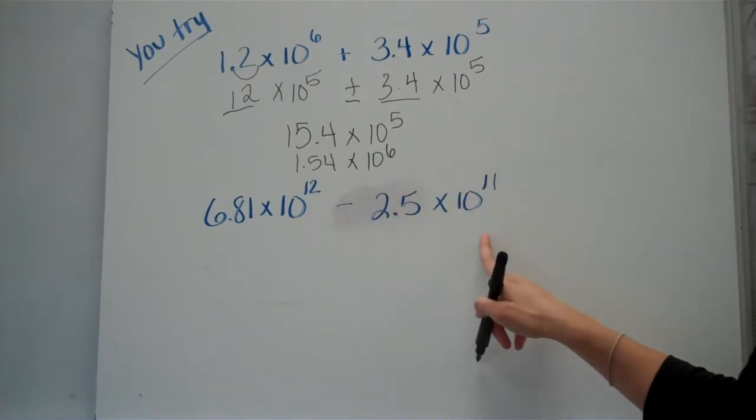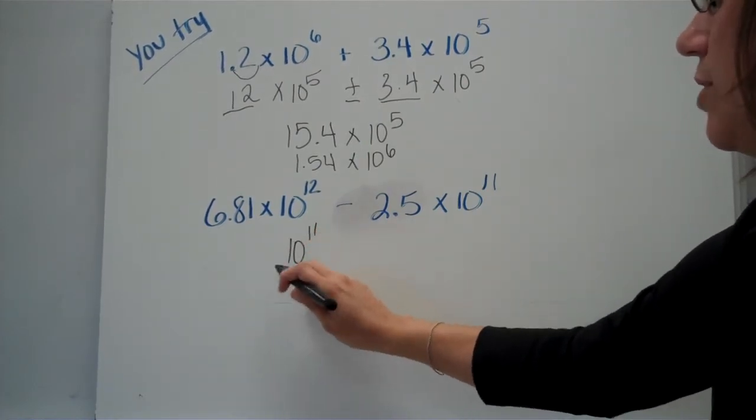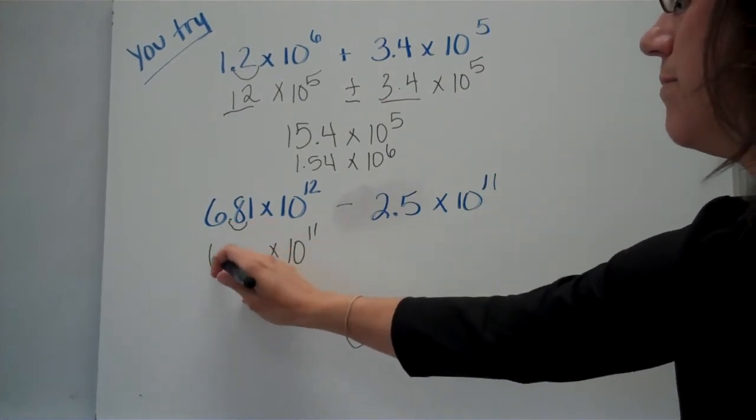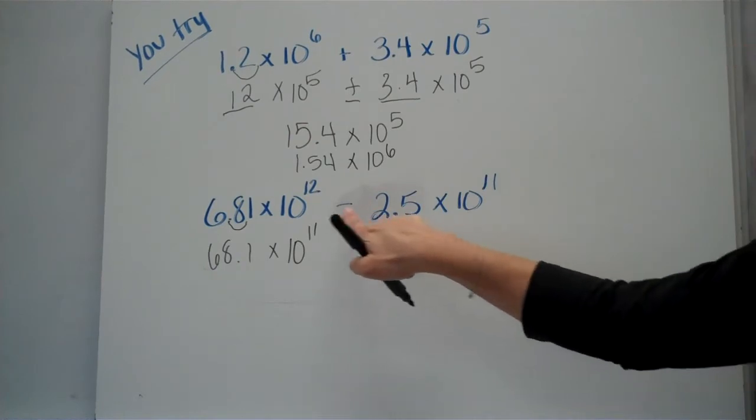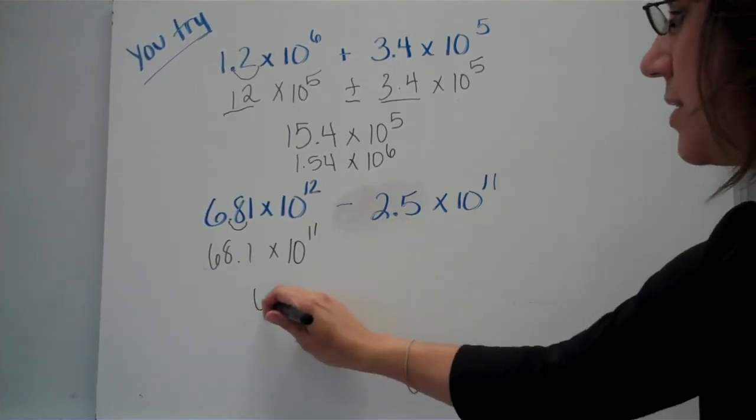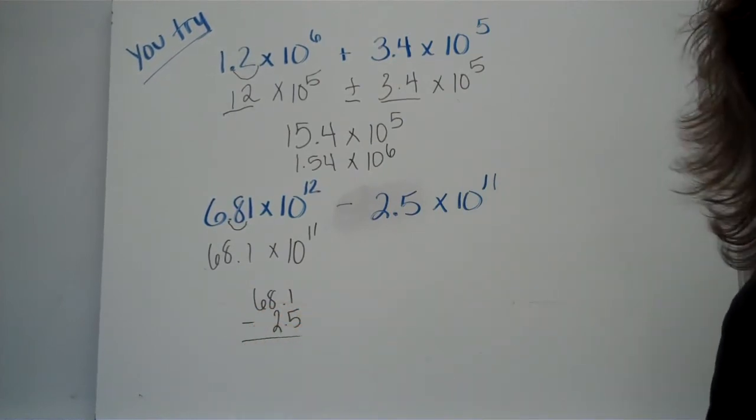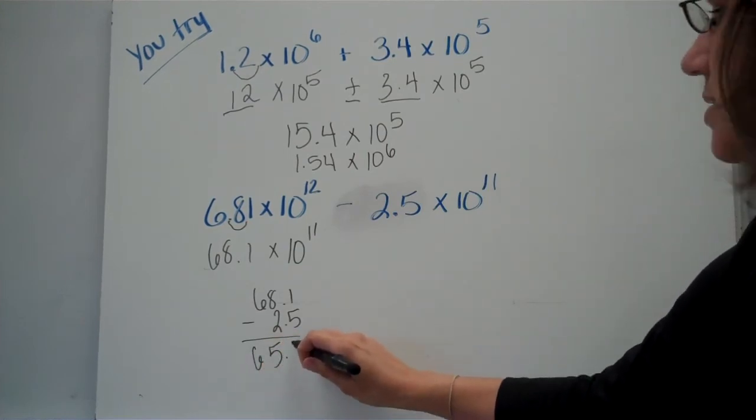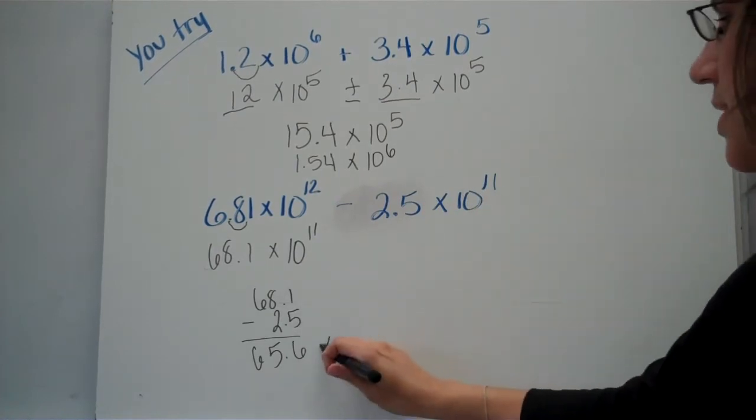Take a look at this one. Again, we want to make the exponents be the same. So I chose to make this one 10 to the 11th power. In order to do that, I'm going to move my decimal this way. Now that my exponents are the same, now I'm going to take my two factors, and this time I'm subtracting them. So you're going to subtract 68.1 and 2.5. And again, you can use your calculator for that step. It comes out to be 65.6. Notice my exponents are the same. I'm going to keep that.